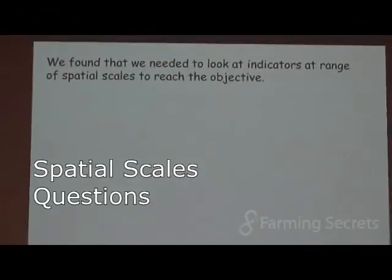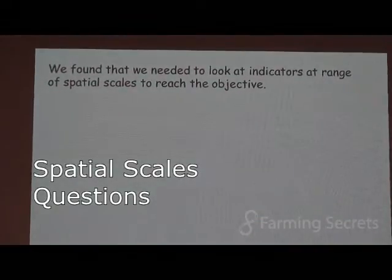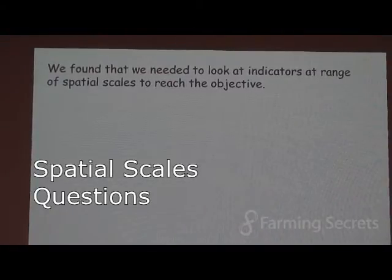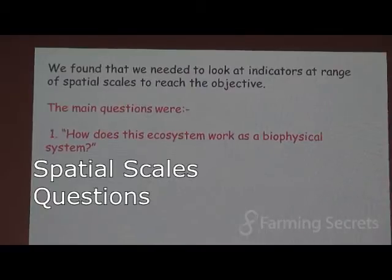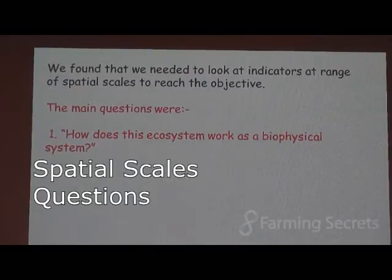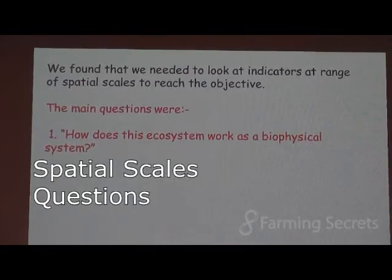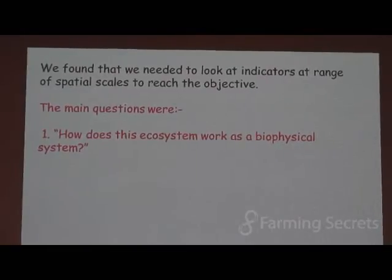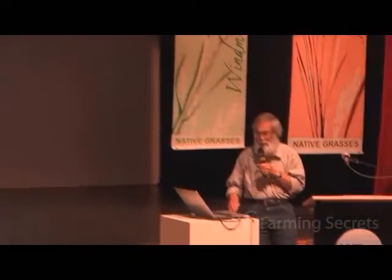We found in our research that we needed to look at a range of spatial scales in order to make sense of the landscapes we were looking at. The main questions with respect to this are: how does this landscape work as a biophysical system? I use this term in the classical sense of having inputs, outputs, and feedbacks.